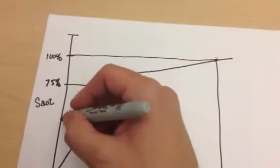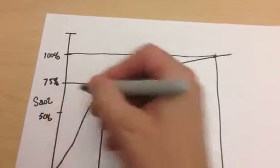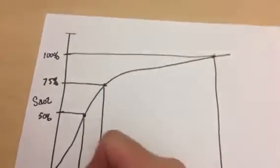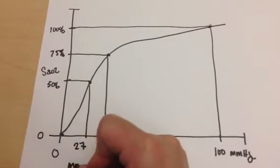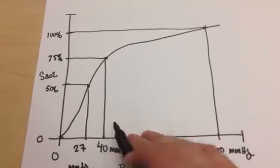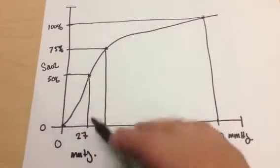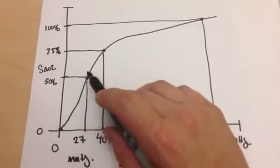And to kind of demonstrate that, what I'm going to do here is I'm going to say at 50%, have a point here, and that is going to correspond to about 27 millimeters of mercury. That's called my P50, a normal P50. The PaO2 that causes an SaO2 of 50% is 27 millimeters of mercury in a person that isn't shifted.